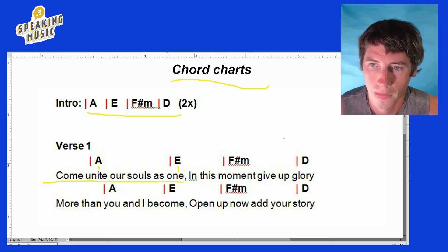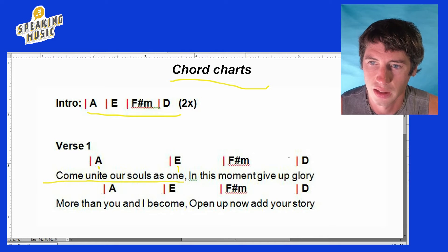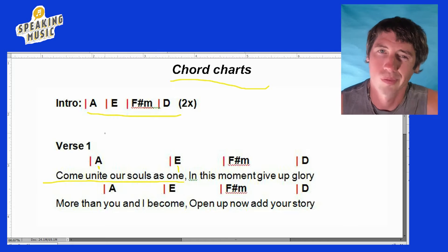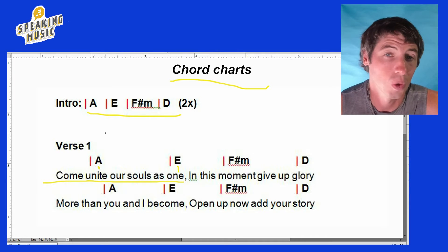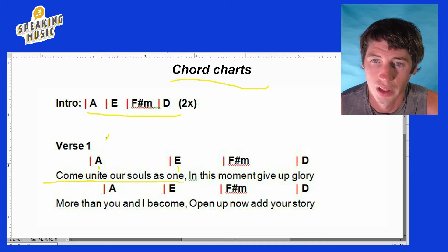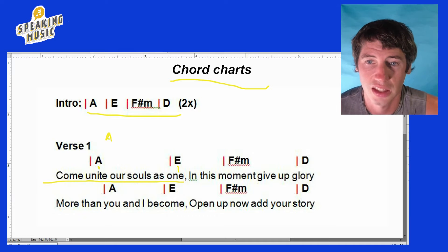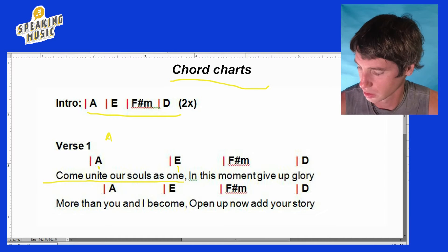This doesn't really tell you what key you're in — you have to know based on the chords. Like this one: we have an A, an E, an F sharp minor, and a D. Typically the first chord is often the key you're in, so we're assuming we're in A. Now let's plug the chords into the scale of A and see if that works.